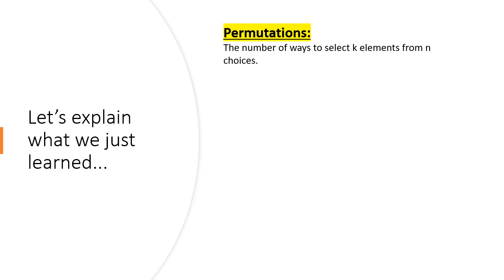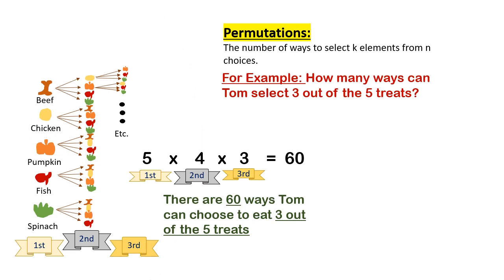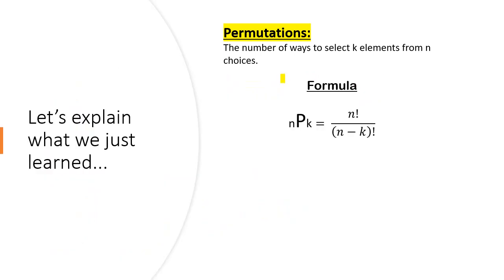Now let's talk about permutations. Permutations refer to the number of ways that we can select k elements from n choices. I know this might seem really abstract, though everything that we've calculated thus far has been a permutation. For example, we calculated the number of ways Tom could choose three out of five treats. This is 5 permute 3. And there's a fancy formula that we could have used to find 5 permute 3. Here it is. You know how mathematicians love their fancy formulas.